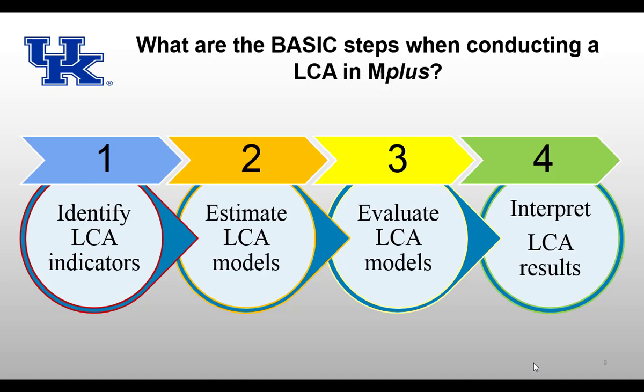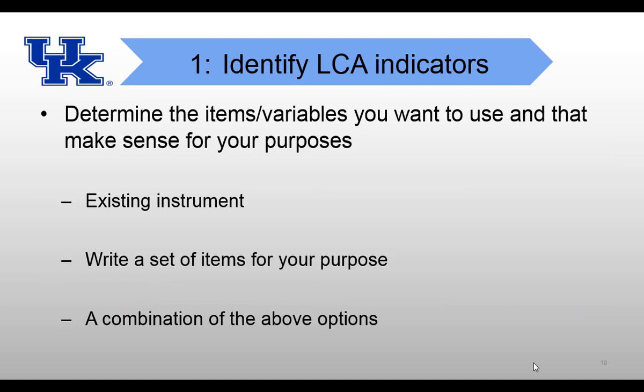What are the basic steps to conduct LCA in M+? In general, there are four steps. Step one is identify LCA indicators. Step two is to estimate LCA models — similar to exploratory factor analysis, we start with a two-class model, then three-class, four-class, until the model becomes too complex to be useful. Step three, evaluate which model is the best solution. Step four, interpret the LCA results. I will illustrate step-by-step how to do this in M+ using an example.